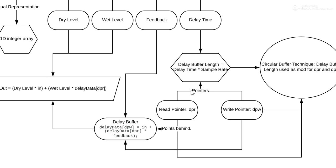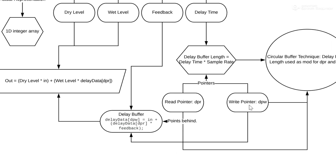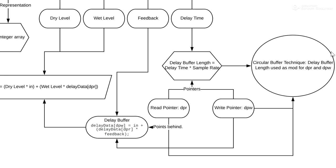We have two indexes which make up the whole algorithm: a read pointer and a write pointer. We store two different locations because we want the write pointer to be ahead of the read pointer, so that we can have the same signal recurring again — that's what creates the delay signal. This is also called the circular buffer technique. We mod by the delay buffer length, so whenever a pointer reaches the end it goes back to the start, giving us that continuous converging delay effect.